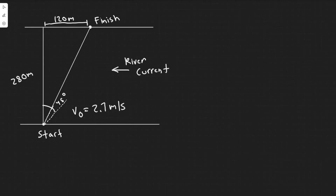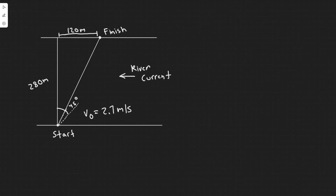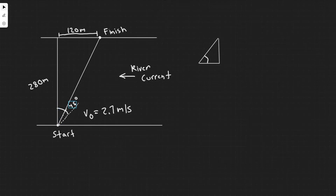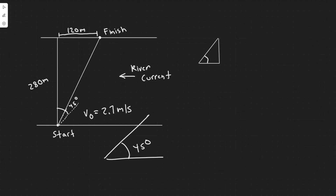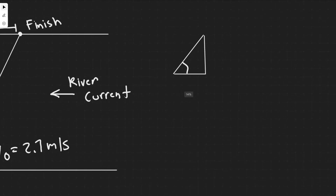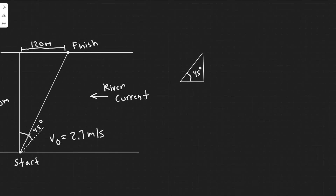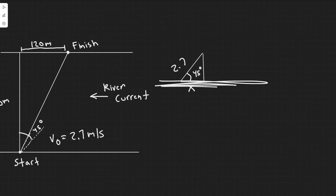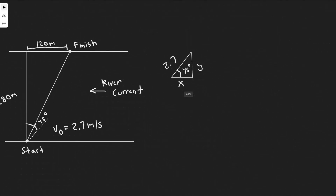To split it into x and y components, imagine it like a triangle. We have three sides, and the angle we're traveling at is 45 degrees to the horizontal. So we're going 45 degrees this way. The magnitude is 2.7 meters per second, which is the hypotenuse. We want to solve for the x and y components of velocity.